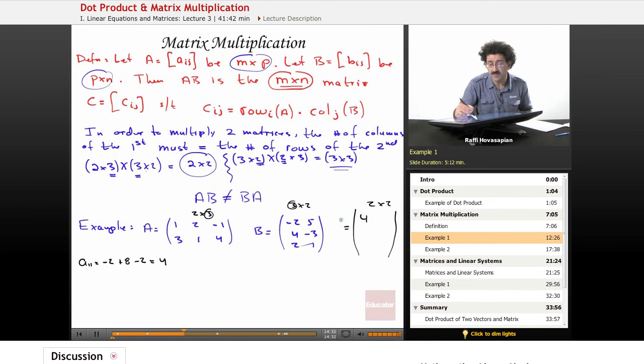Now let's do this entry, which is the first row, second column. Well, the first row, second column means I take the dot product of the first row of A and the second column. So A12 entry is equal to one times five, which is five, two times negative three, which is negative six, minus one times one, which is minus one. One times five is five, two times minus three is minus six, minus one times one, minus one. So five minus six is minus one, this is minus two. So this becomes minus two.